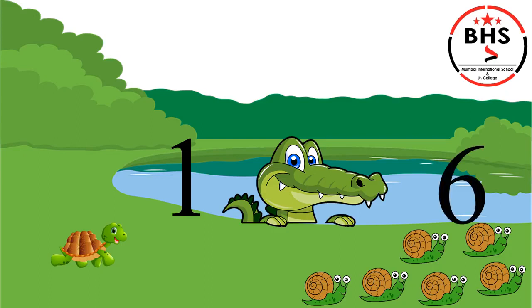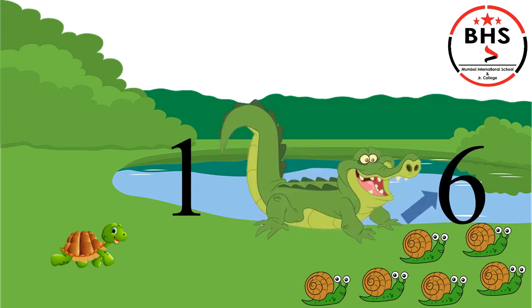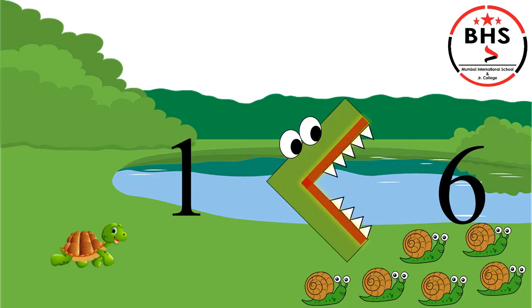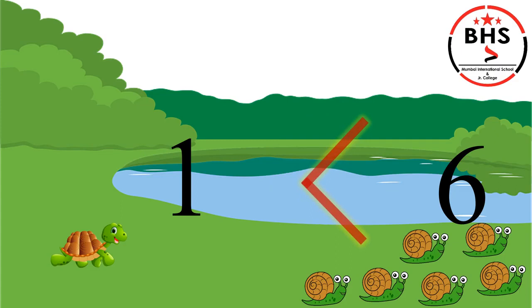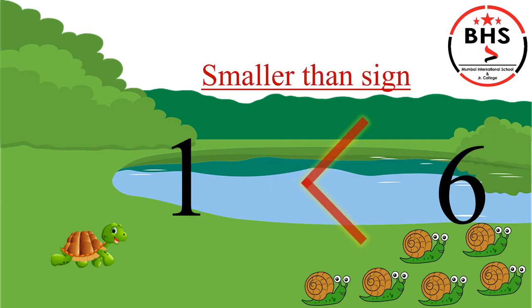Children, as the crocodile always wants to eat more, what is he going to eat — 1 tortoise or 6 snails? Of course, he will eat 6 snails. So he will open his mouth towards 6 snails. Children, can you see the shape of the crocodile's mouth? It is opening towards 6. This red color shape is called as the smaller than sign. We will read the numbers from left to right. It is read as 1 is smaller than 6. When the crocodile's mouth will open to the right side, it will be called as the smaller than sign.